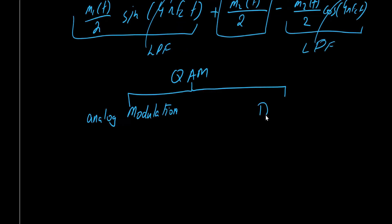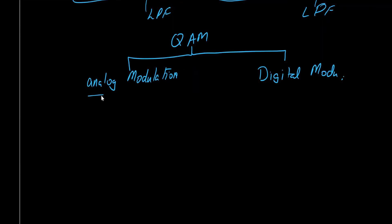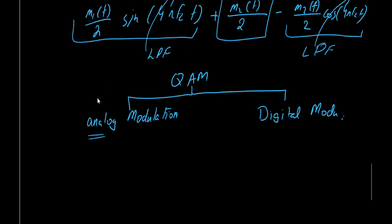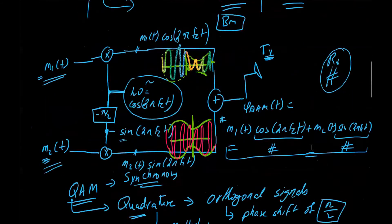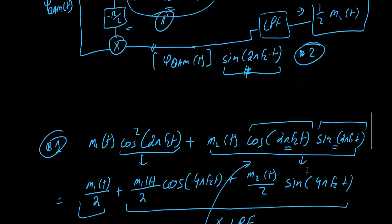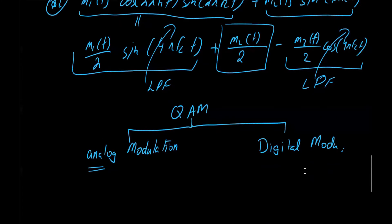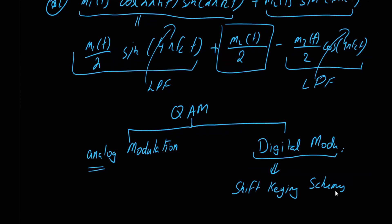QAM can be segregated into analog modulation and digital modulation. In analog modulation, we can define different amplitudes for the local oscillator, which falls under the umbrella of QAM. In digital modulation, we have shift keying schemes — specifically, this corresponds to amplitude shift keying (ASK) in the digital framework.